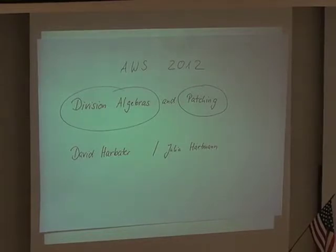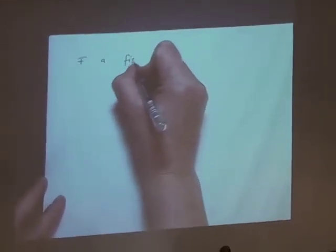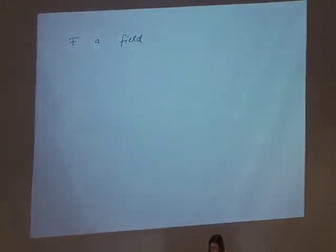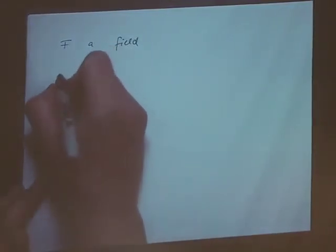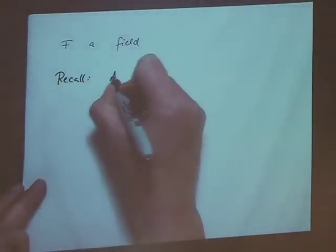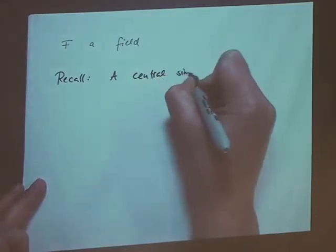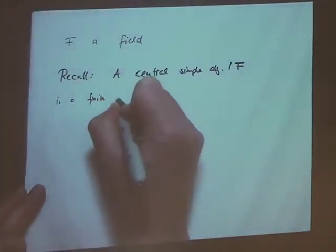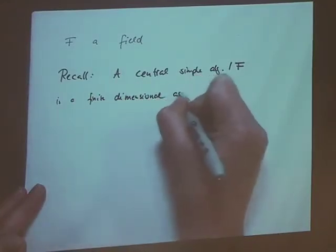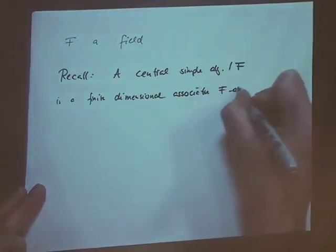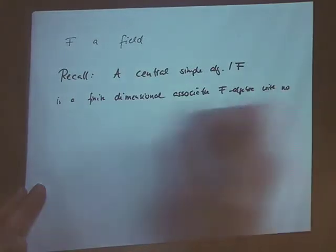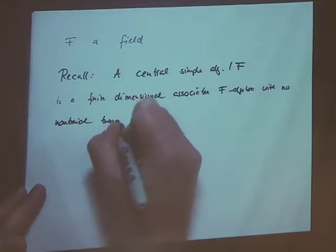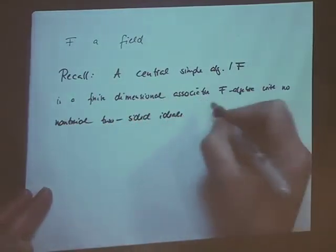So what's our basic setup? F is always a field. Recall that a central simple algebra over F is a finite-dimensional F-algebra which is associative, which is simple — it has no non-trivial two-sided ideals — and whose center is F.